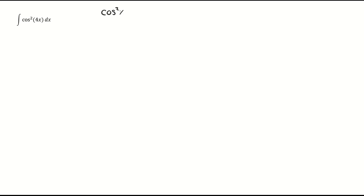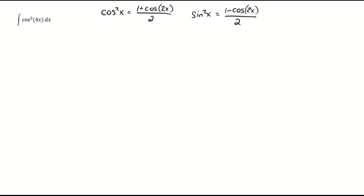If you have just an even power of a trig function — just a cosine squared or a sine to the fourth — you're going to use your power-reducing formulas. Cosine squared x equals 1 plus cosine 2x divided by 2, doubling the angle. Or for sine, sine squared x equals 1 minus cosine 2x over 2. Easy to remember: it's plus for cosine and minus for sine. These reduce your powers so you'll just have a cosine and can integrate it.